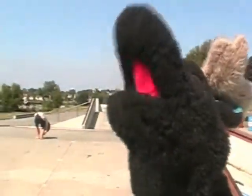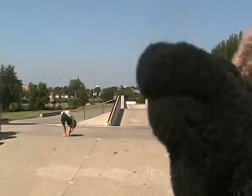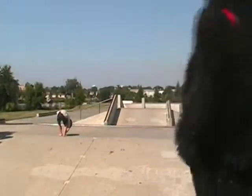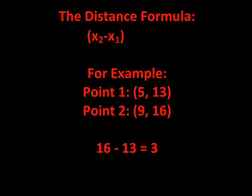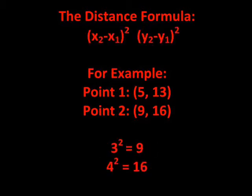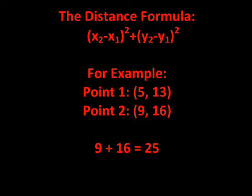So now I'll add them and get 25. And then just take the square root. The distance formula isn't too hard. First find the difference between your x's. Then find the same thing for both your y's. Square them, then add them up and find the square root.